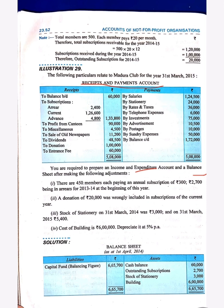First of all, read the adjustments: 450 members, each paying annual subscription of 300. 2,700 being in arrears at the beginning of the year — so 2,700 are arrears of subscription. Donation of 20,000 was wrongly included in subscription of the current year. Opening stock and closing stock, cost of building is 6,05,000 with depreciation.